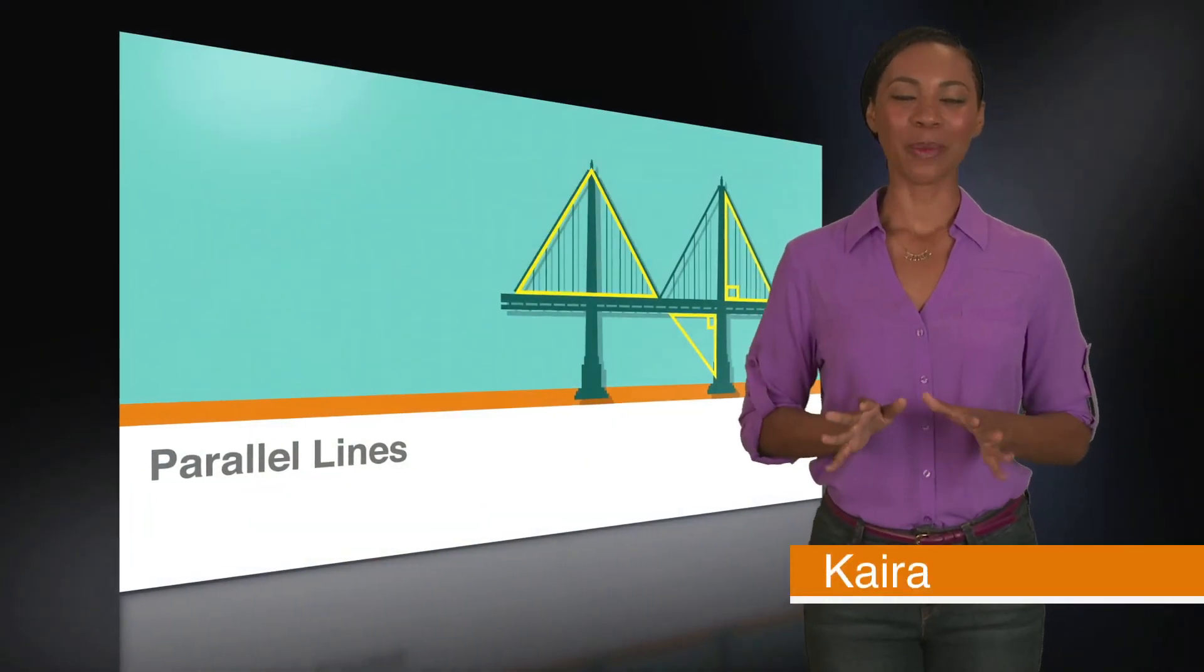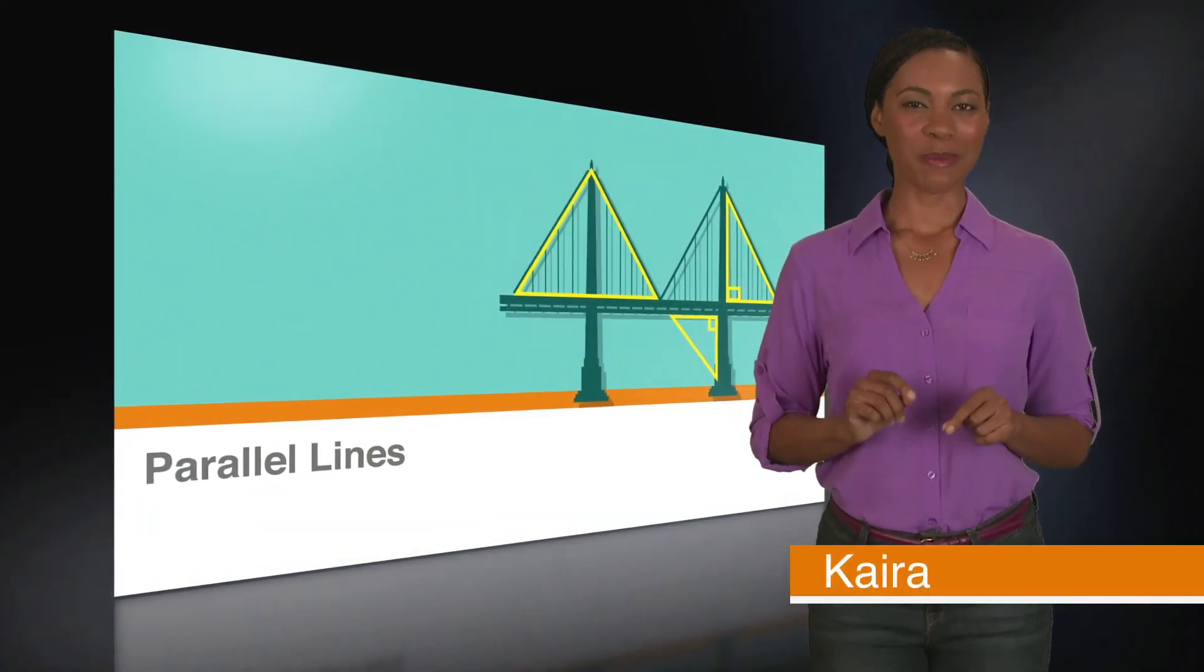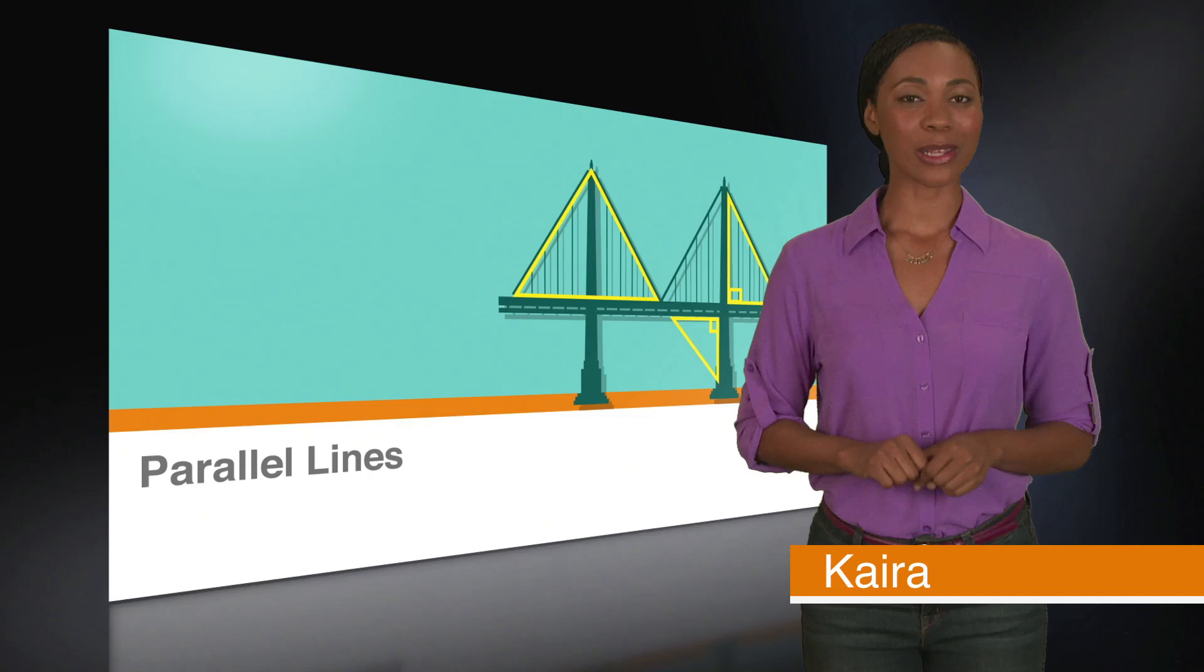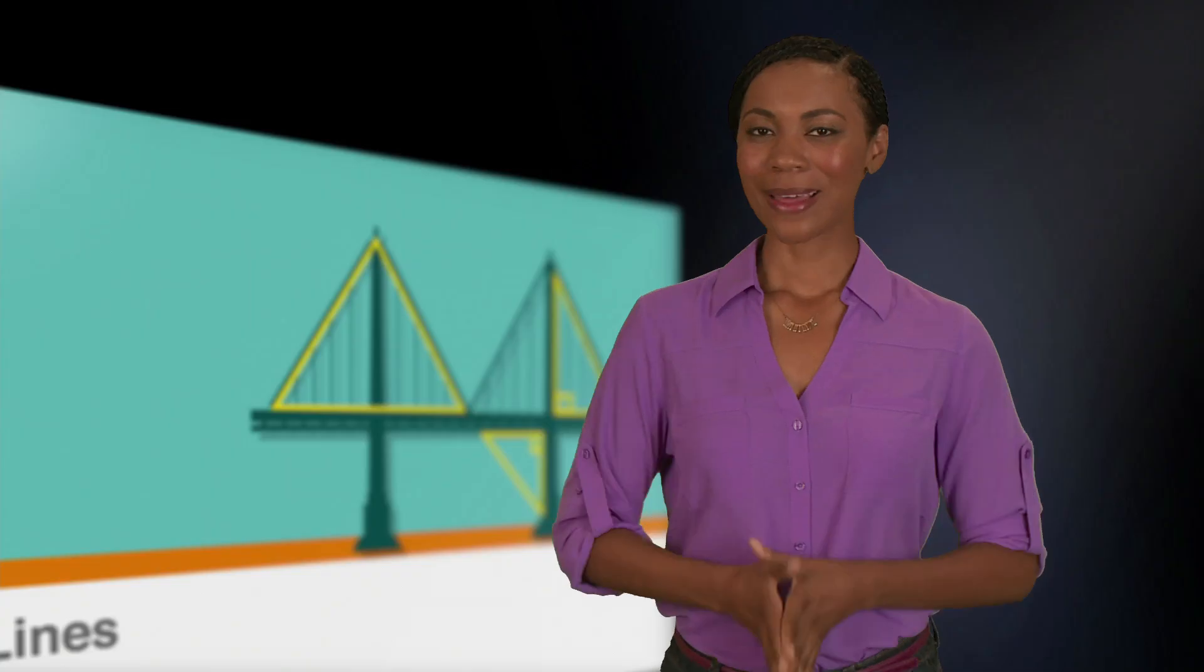We've been spending a lot of time on slopes and lines, and you may remember that parallel lines are two lines with the same slope. There's actually a lot more to it than that, though.